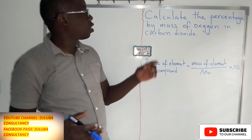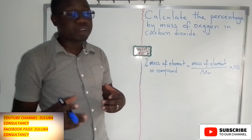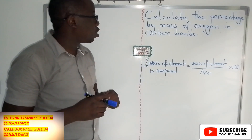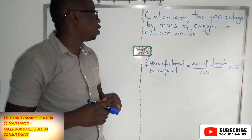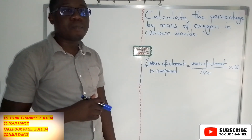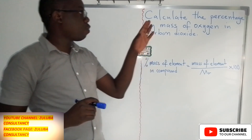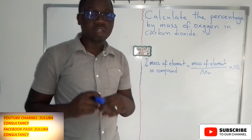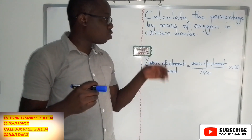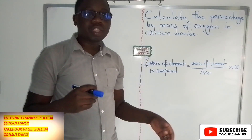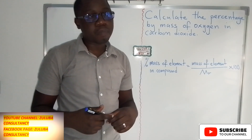Let's look at the question that we have. The question reads: calculate the percentage by mass of oxygen in carbon dioxide. With this question, we need to get the mass of the element and the Mr of the compound.